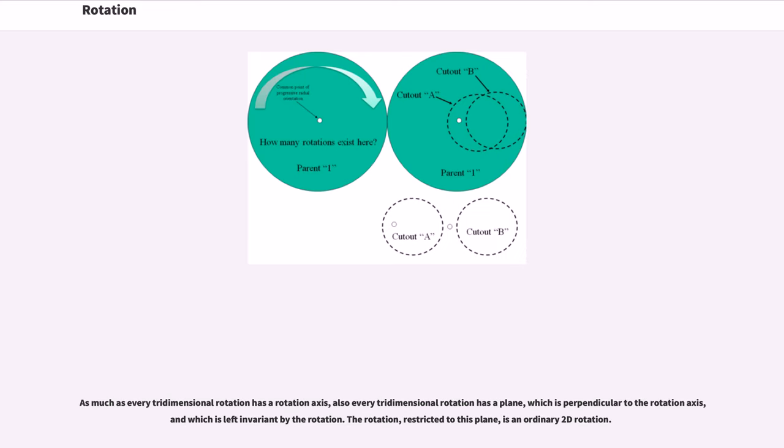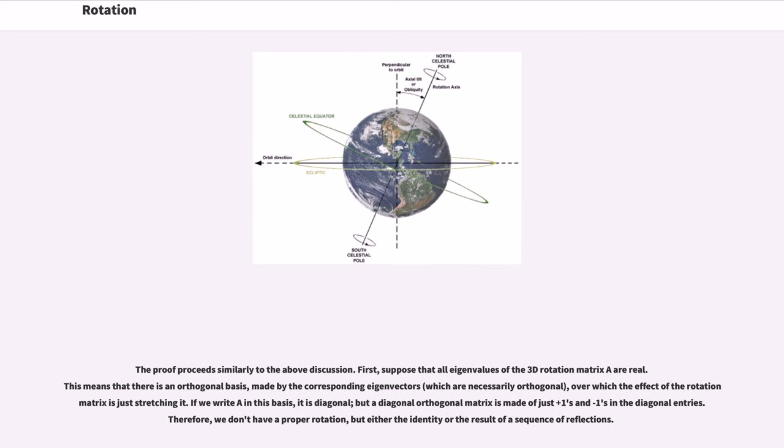As much as every three-dimensional rotation has a rotation axis, also every three-dimensional rotation has a plane which is perpendicular to the rotation axis and which is left invariant by the rotation. The rotation, restricted to this plane, is an ordinary 2D rotation. The proof proceeds similarly to the above discussion.